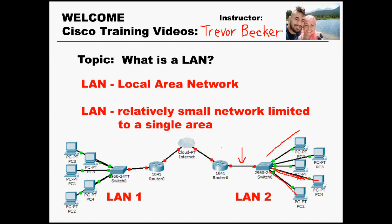Whenever your switch runs out of ports, you would need to daisy-chain another switch so that you could add more. At this point, you would be creating an access layer for your infrastructure.